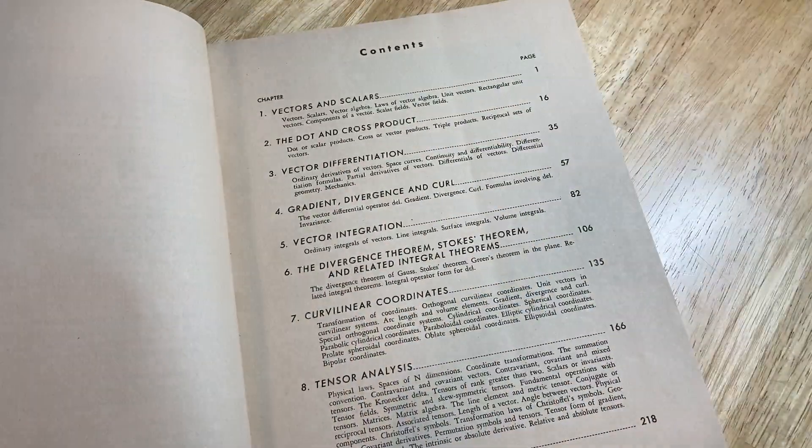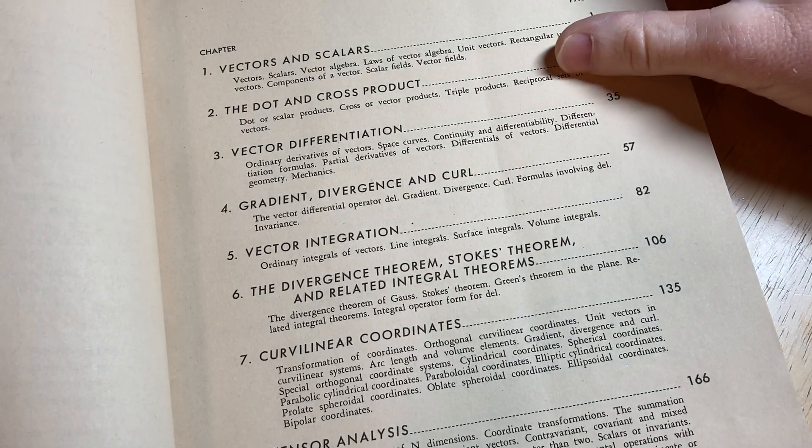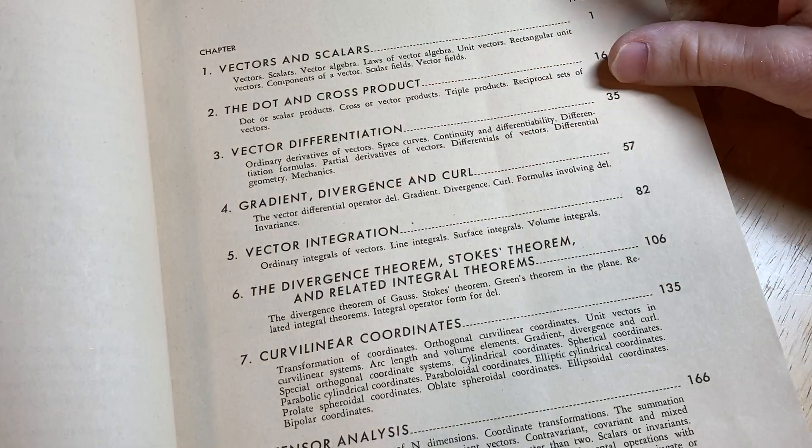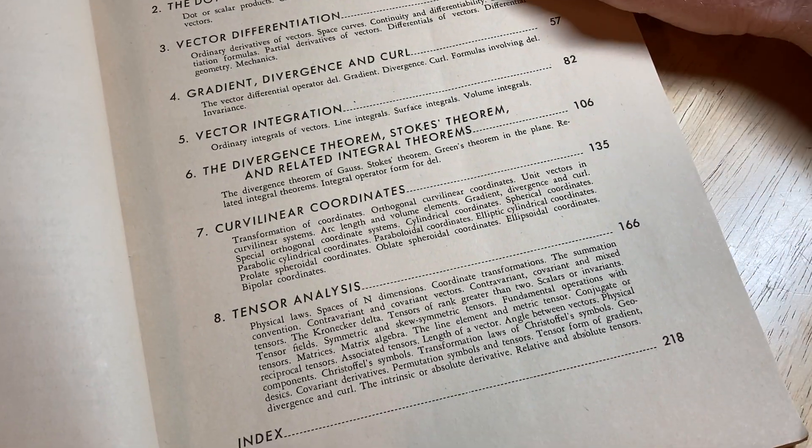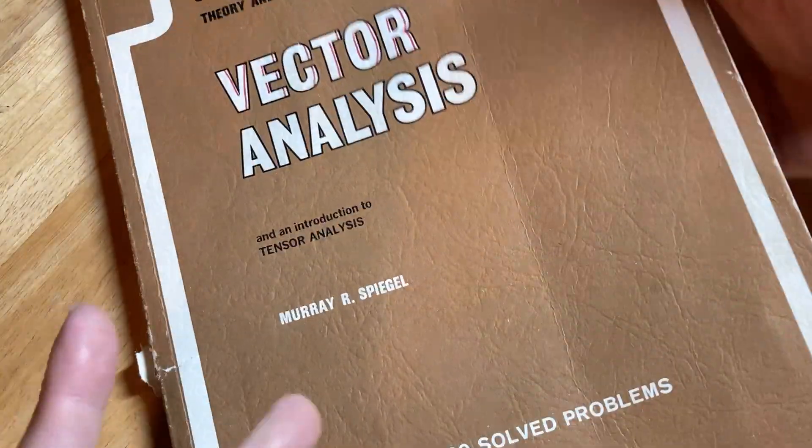Wow, look at this stuff. Let's look at the contents here. Vectors and scalars, the dot and cross products, vector differentiation, gradient divergence and curl, vector integration, divergence theorem, curvilinear coordinates. Pretty cool, right? It's just vectors. It's a book on vectors. It's just vector analysis, right?